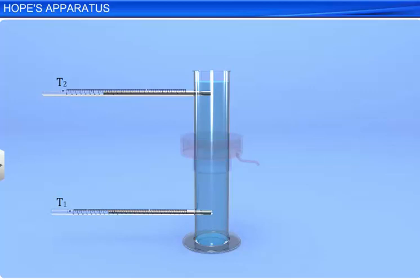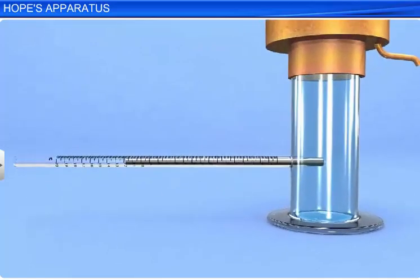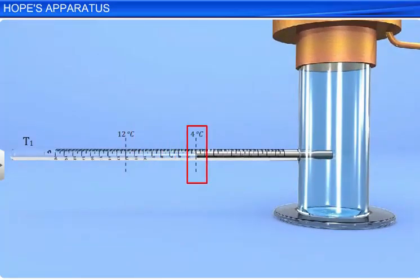As a result, the denser layers of water in the central portion move downwards, displacing the lighter layers of water there towards the central portion. This forms a convection of water. Due to this convection, thermometer T1 near the bottom shows a rapid fall in temperature till it reaches 4 degrees Celsius.